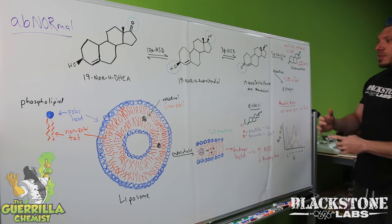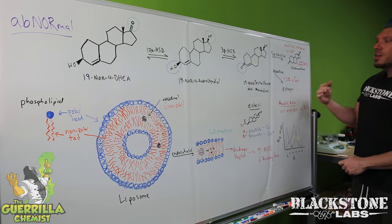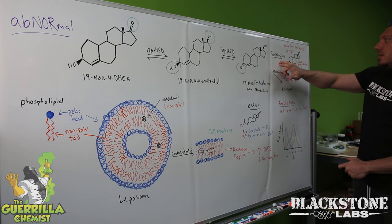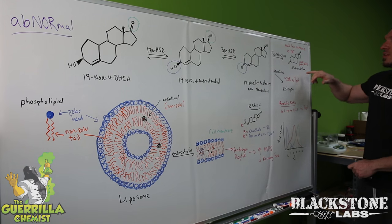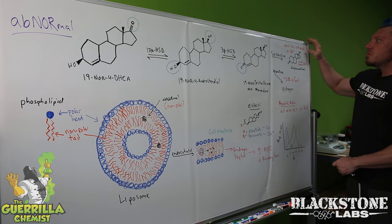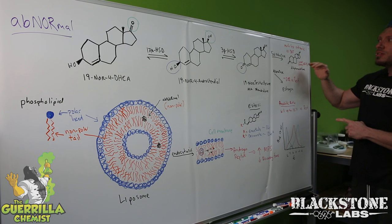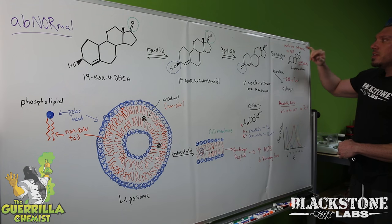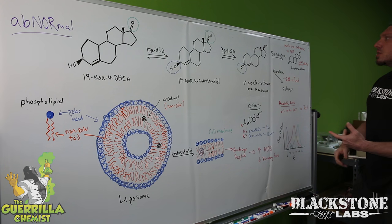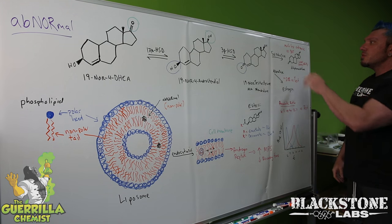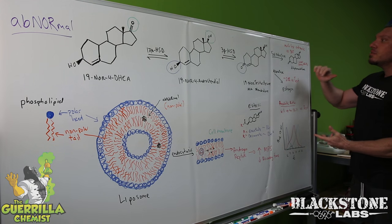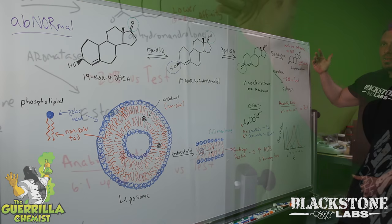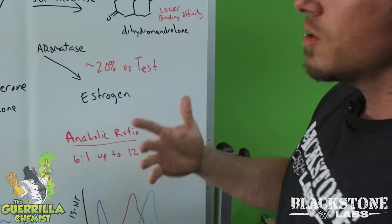This product is really cool because the first questions I always get are: does it convert to estrogen, does it convert to DHT, what are the possible side effects? Via the enzyme 5-alpha reductase, it does convert into dihydronandrolone, which is not DHT. Dihydronandrolone actually has a much lower binding affinity to the androgen receptor than DHT does. You're not going to get the same side effects that you would get from DHT derivatives, such as enlarged prostate and things like that.